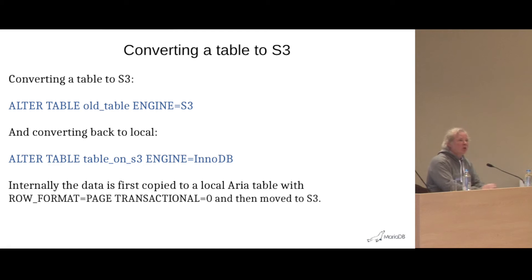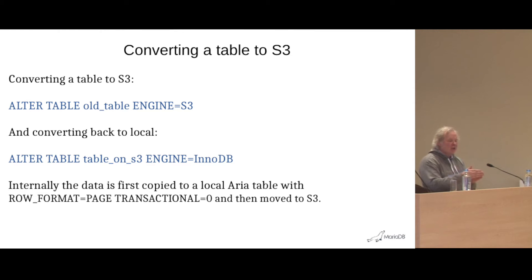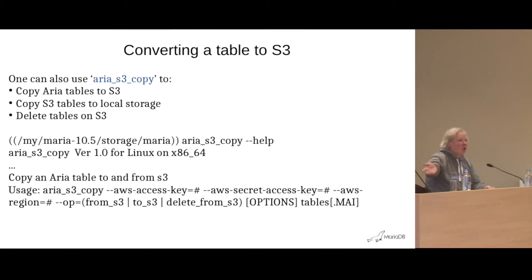To use this: you have a table, you want to use it as an S3 table, you convert it and it's in S3. Internally, I first create the Aria table with row format page and without transactions, to keep it as compact as possible. Because I create it from scratch, there are no gaps — all pages are lined up perfectly, which makes caching much faster. I also created a tool: if you have lots of Aria tables, you can copy all of those to S3, or take S3 tables and copy them back, and you can delete them in S3.